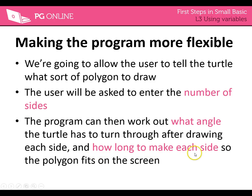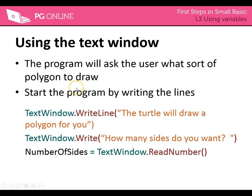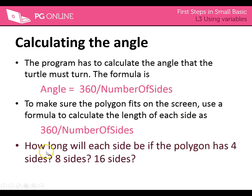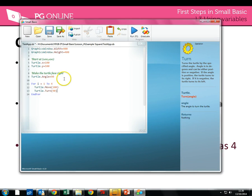And then how long to make each side so the polygon all fits on the screen. That's going to involve using the text window from last week, so we're going to modify the code and add in a few little messages. So: text window dot write line 'The turtle will draw a polygon for you' — a little message. Then text window dot write 'How many sides do you want?' — note the little space at the end. And then the variable 'number of sides' is equal to text window dot read number, so it runs this bit of code, reads a number from what you type in, and saves it. Then we're going to work out the angle. Let's go and add that code in.